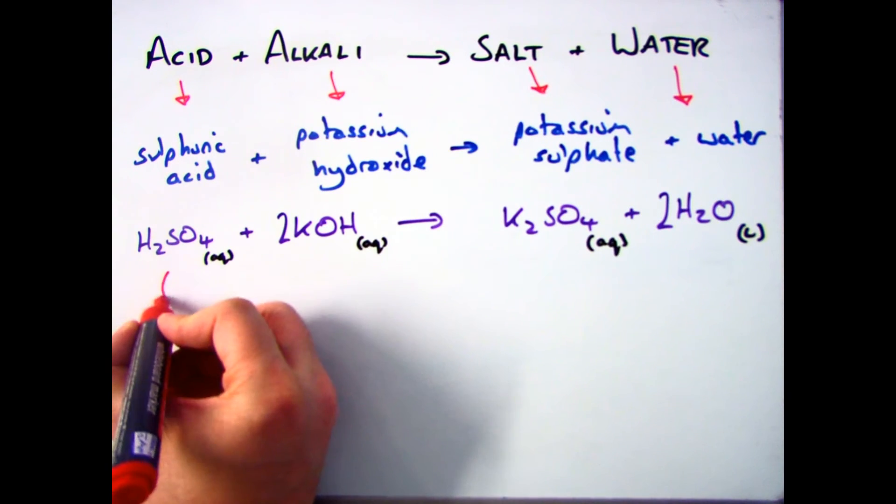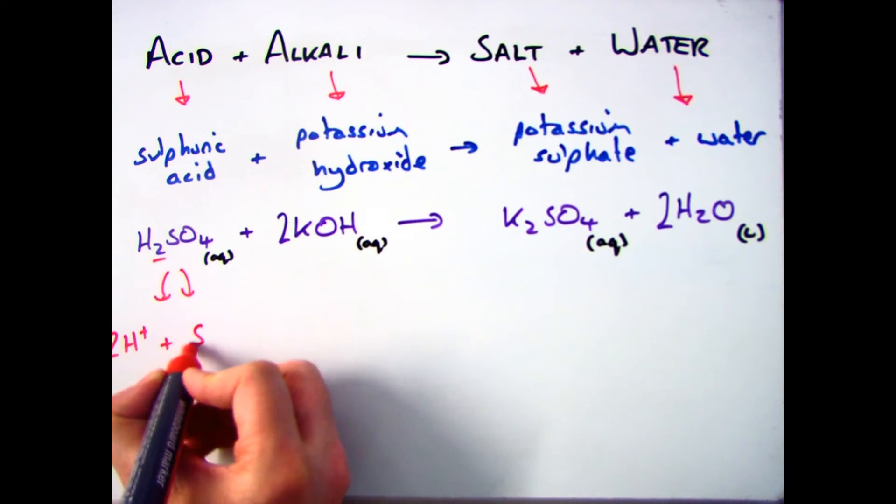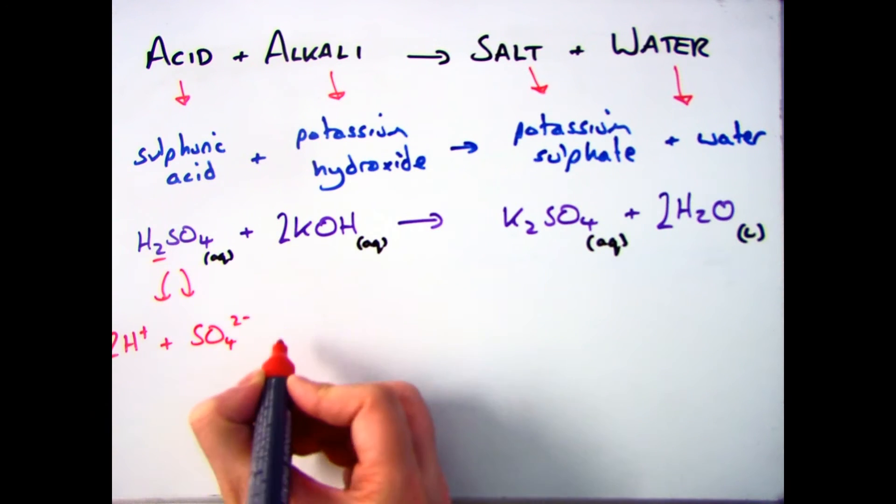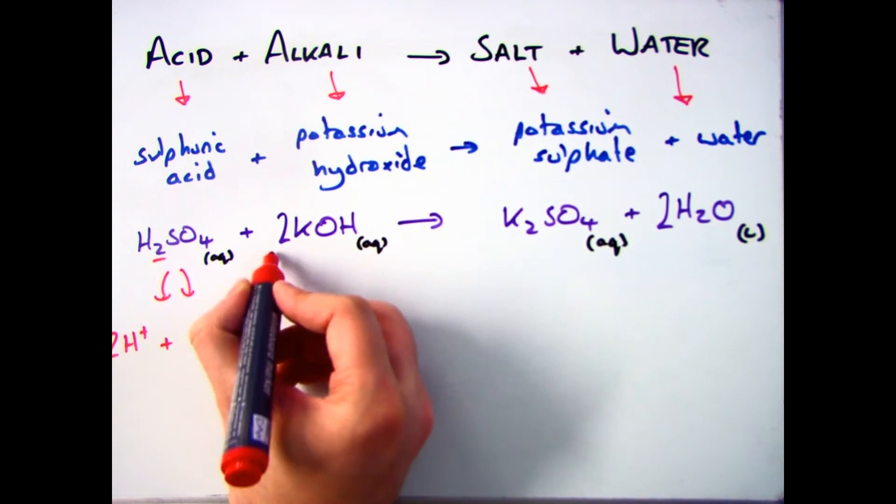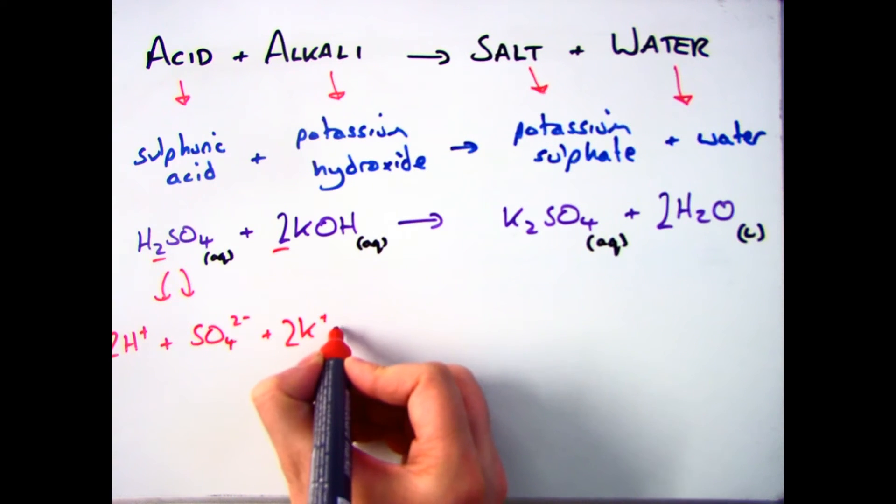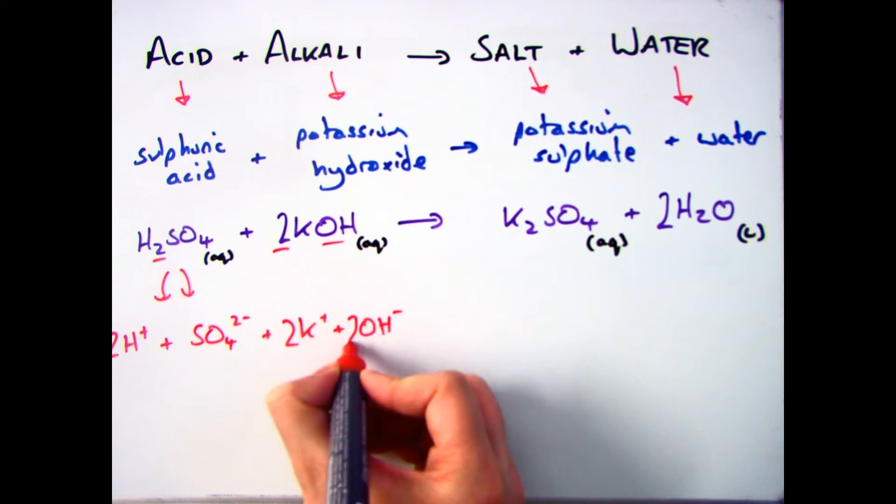If we turn that into the ions, my H2SO4 turns into H plus, I've got two of them. SO4 two minus, that's one of the symbols, the ionic symbols that you need to know. I've got my K plus, two of them. My OH minus, two of them. So I've got two at the front.